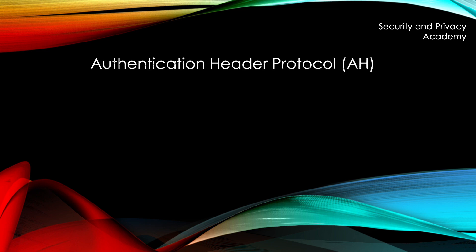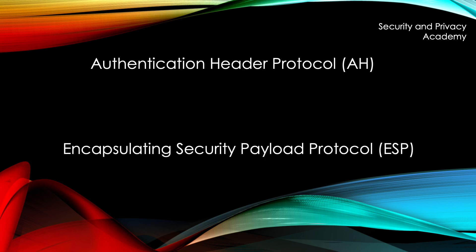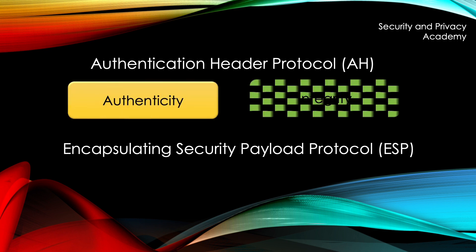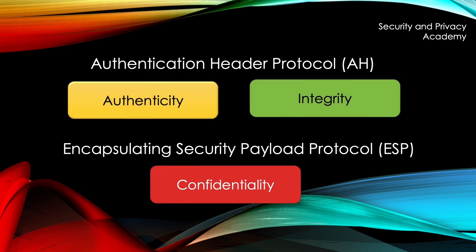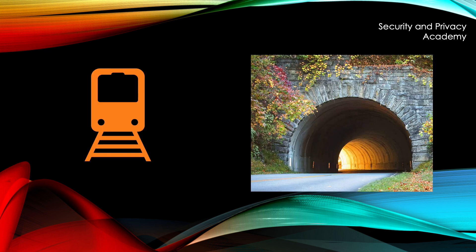There are two main protocols: the Authentication Header protocol AH and the Encapsulating Security Payload protocol ESP. AH covers authenticity and integrity, while ESP initially covered only confidentiality. Now ESP covers all three protection goals. Both IPSec protocols can be used in transport and tunnel mode, but more on that later.